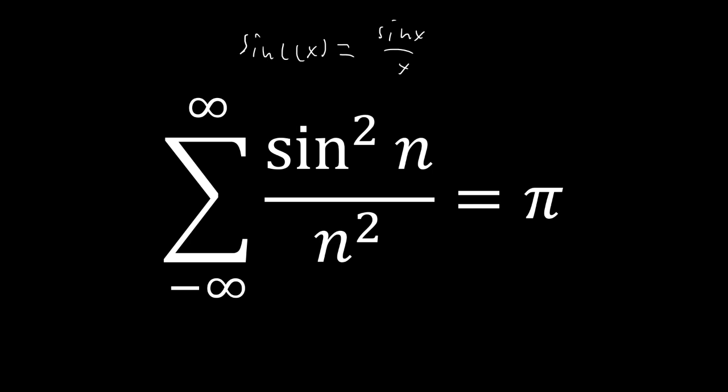Interestingly, if you expand that to sums, the same actually holds true. So if you go from negative infinity to infinity of sinc(x), you're going to get π. And the same thing if you go from negative infinity to infinity of sinc²(x) — which is what we're going to show right here — you also get π. So without any further ado, let's go ahead and prove this epic sum.